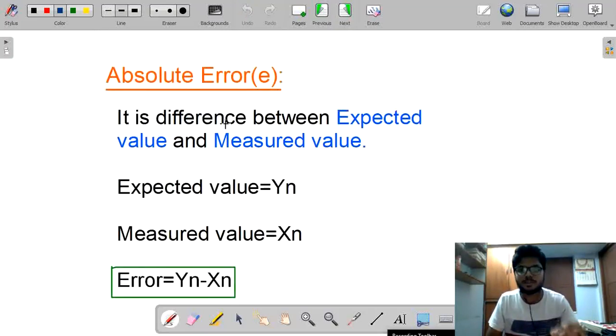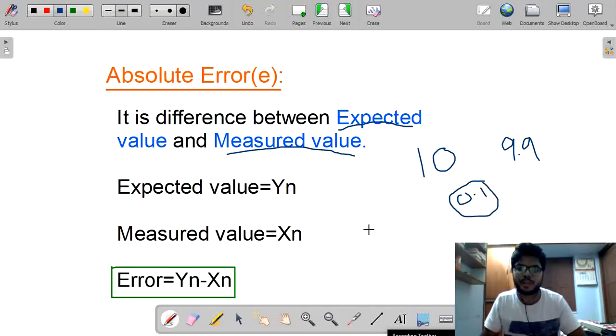Now, absolute error. What is absolute error? It is the difference between expected value and measured value. What is expected value? Expected value means the value which we want to need. What is measured value? The value which we get. Suppose I need a value 10, it is my expected value, but what my measurement is showing, my reading is showing 9.9. What is the difference? 0.1. It is called absolute error. See these notations are very important. For expected value, we need to place yn, for measured value, we need to place xn. Then what is error? E equal to yn minus xn. It is called error.